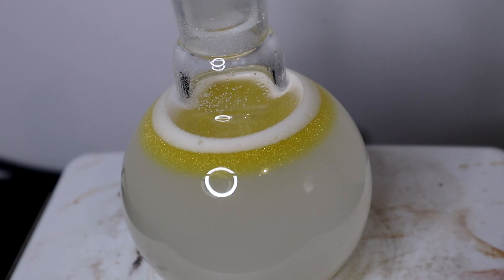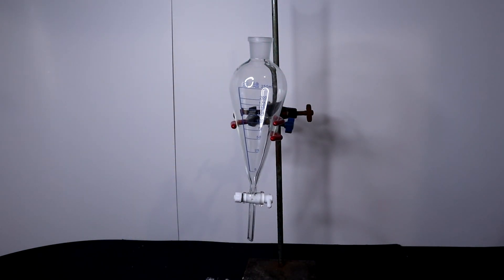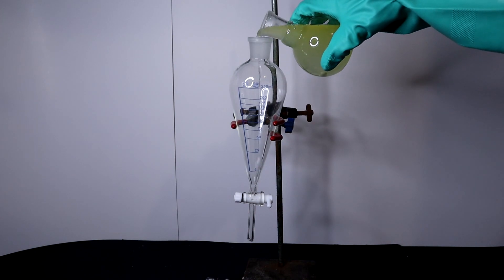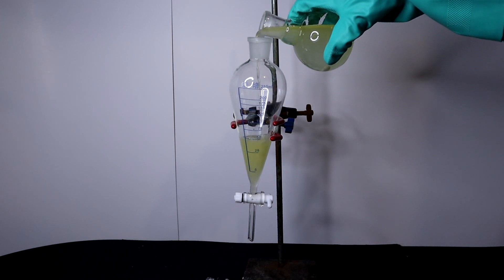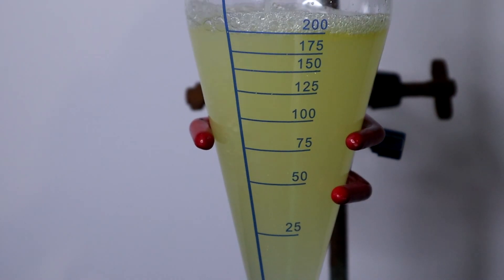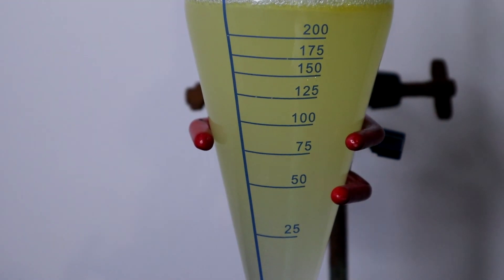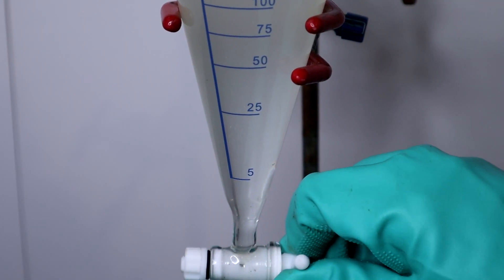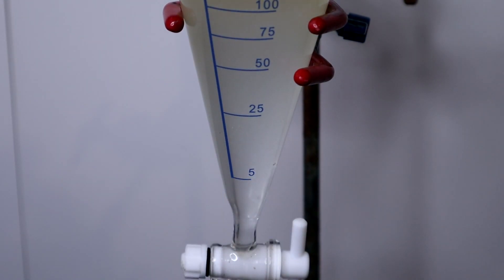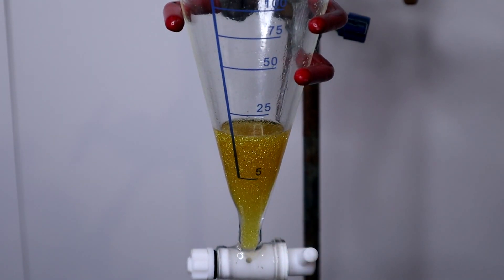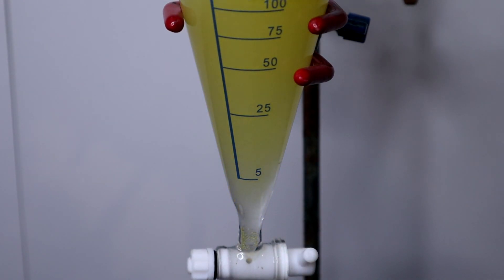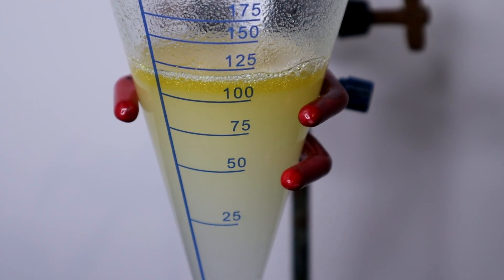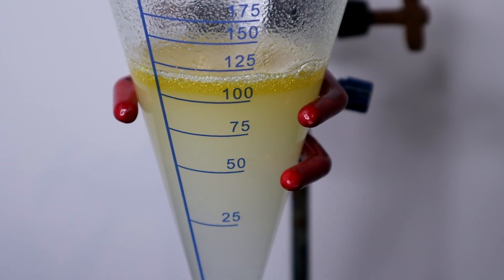This solution was then poured into a 250ml separatory funnel and the lower layer was removed. The leftover yellow liquid was then washed once with 100ml of a saturated salt solution, then followed by 100ml of distilled water.